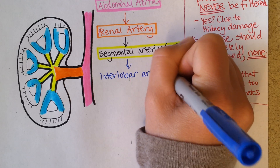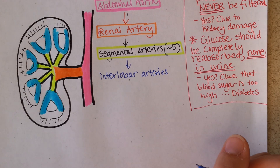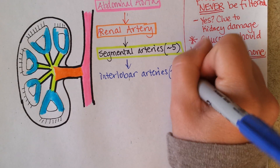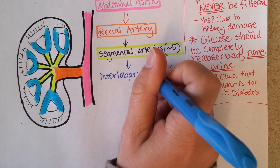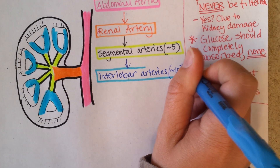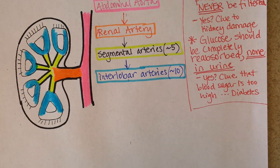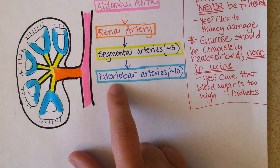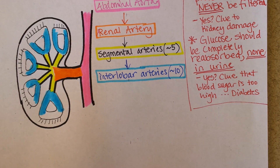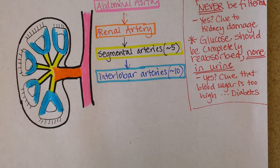Now, here is a warning for those of you who like looking up different sources and textbooks — you will very likely find some additional blood vessel divisions and names. I really don't want you to worry about that. I'm going to test on a pretty basic progression of blood vessels, because what I really want you to understand is that the blood has to get to the filtering apparatus.